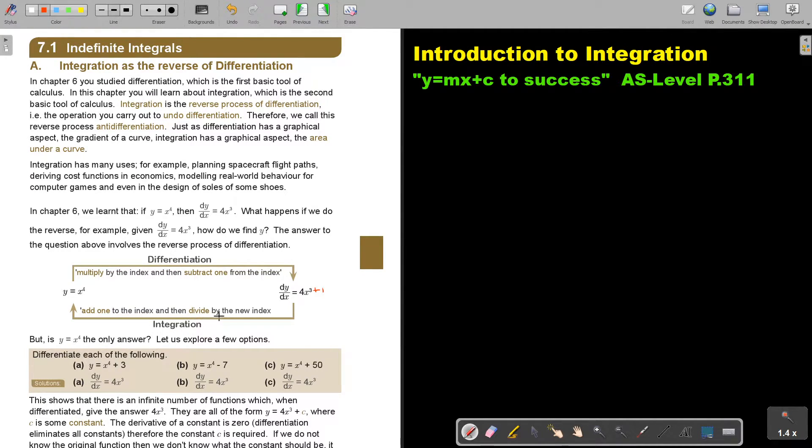And then divide by the new index. What will be the new index? It will be 4. So I divide by 4. So that cancels and that's x to the power of 4. And that is the process of integration. So I first add 1 and then divide by that result.